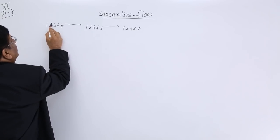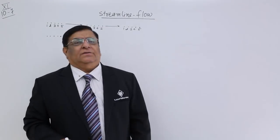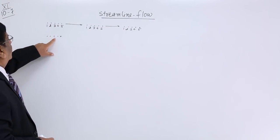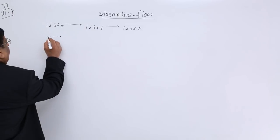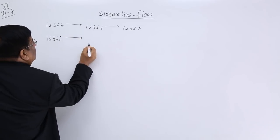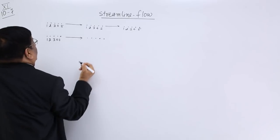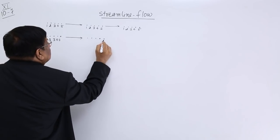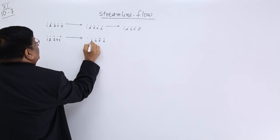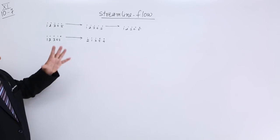That means each and every particle has the same velocity. There is another type of motion. Again there are particles one, two, three, four, five. And when they move, after some time we find these five particles but their order has changed. Here this is number four, number five is here, number three is here, number one is here, number two is here. This order has changed.